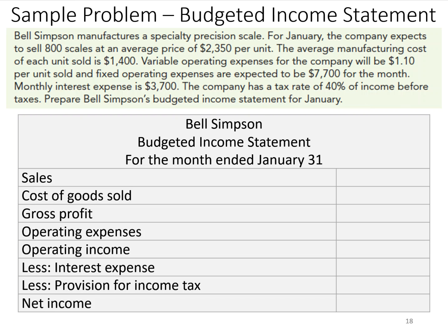So for sales, we need to do a little calculating. We need to first figure out the number of units — they expect to sell 800 units at an average price of $2,350 a piece. So 800 times $2,350 is $1,880,000.